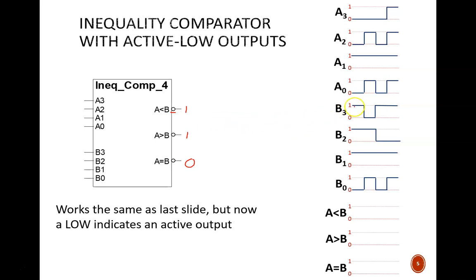In the first time slot, B3 is bigger than A3. Therefore, B is the bigger number overall. So the A is less than B line is active at 0. The others are inactive, at 1. Continuing this for the other time slots produces these results.